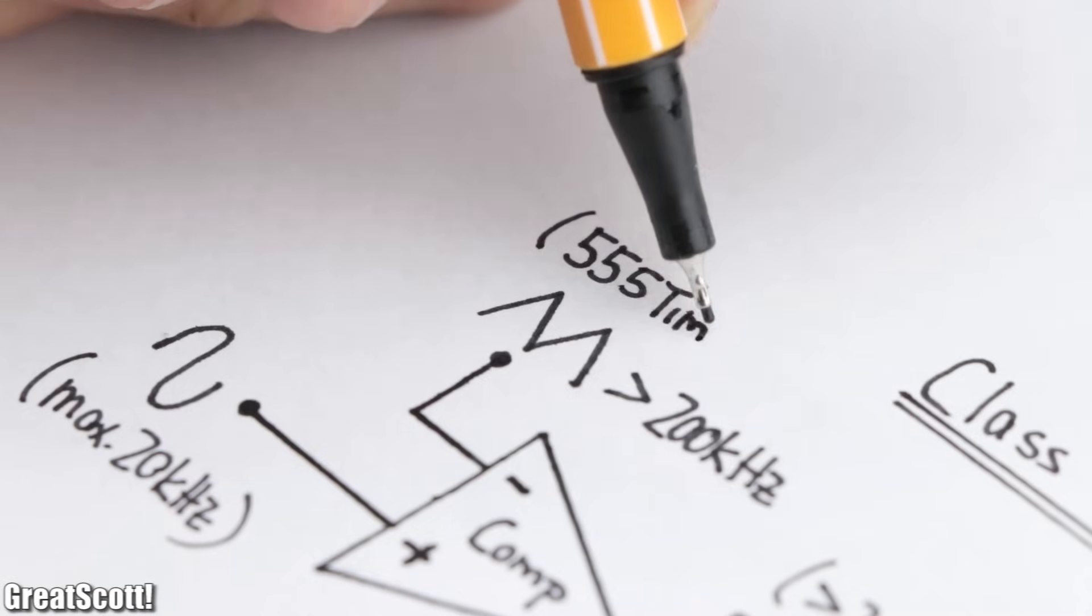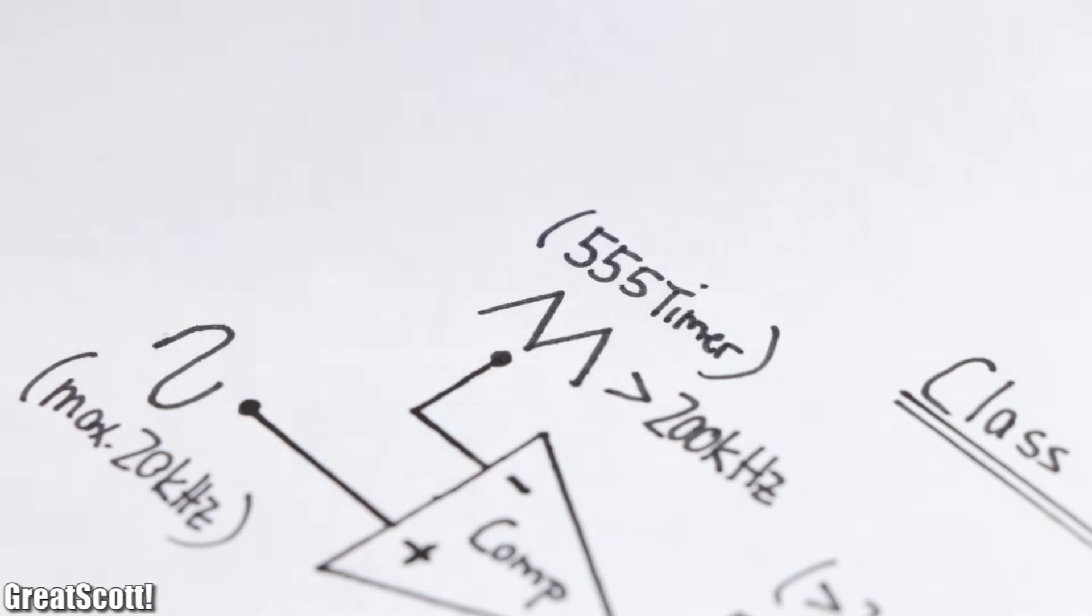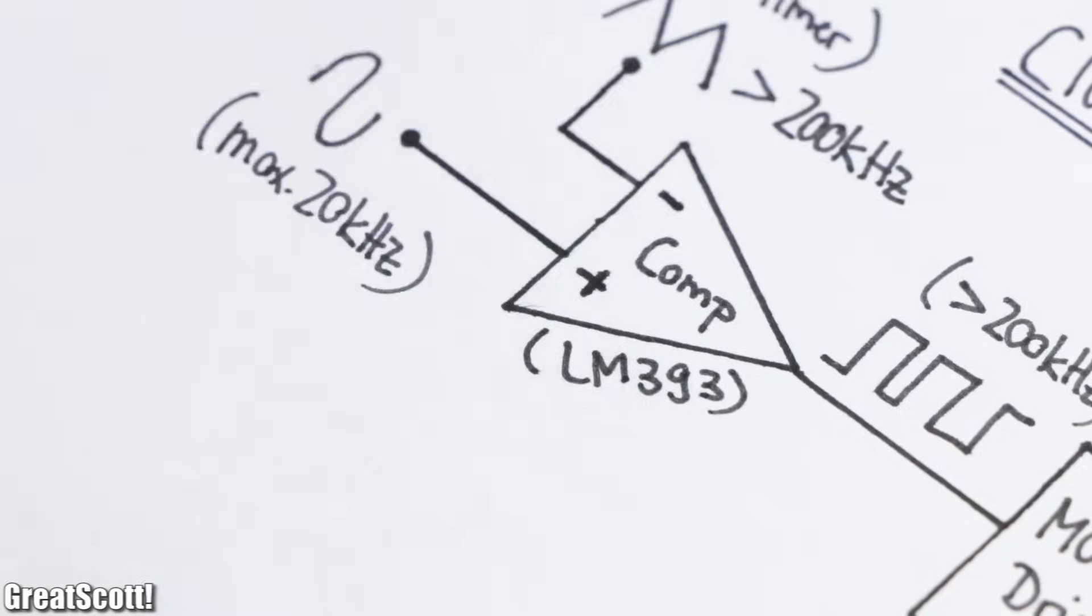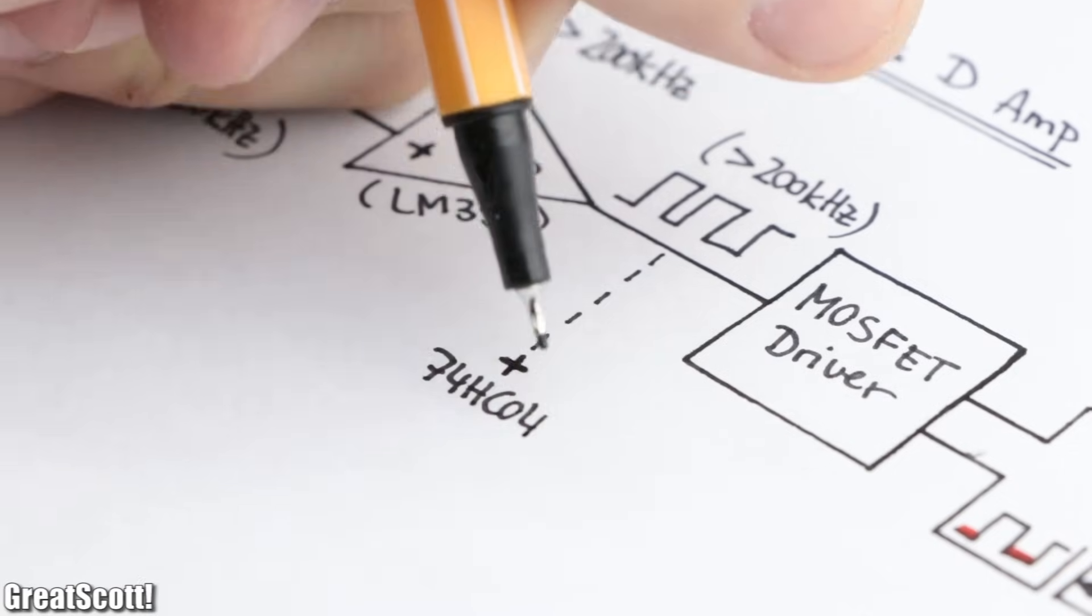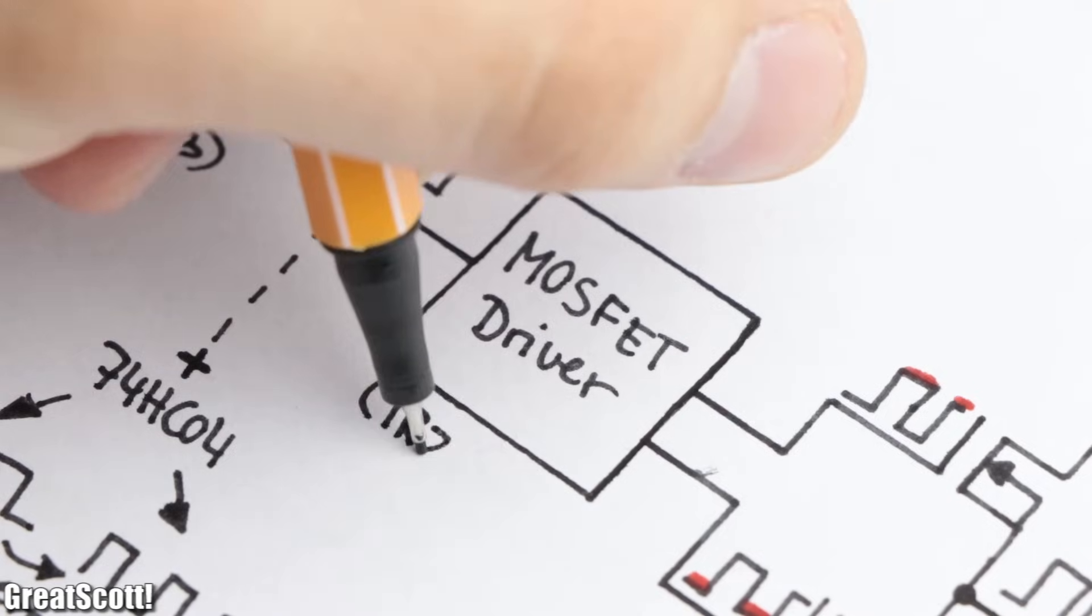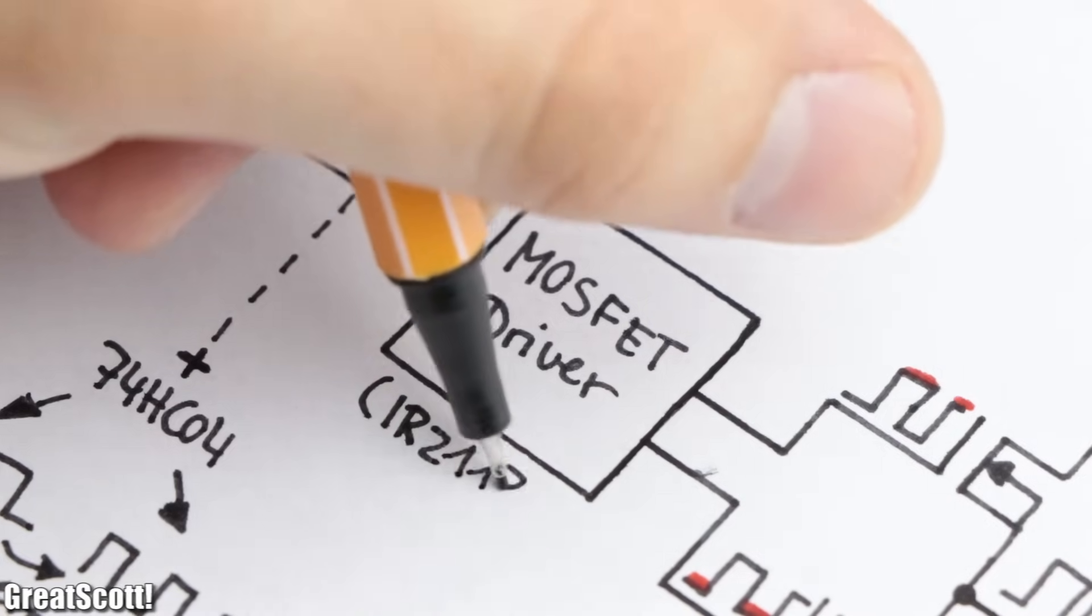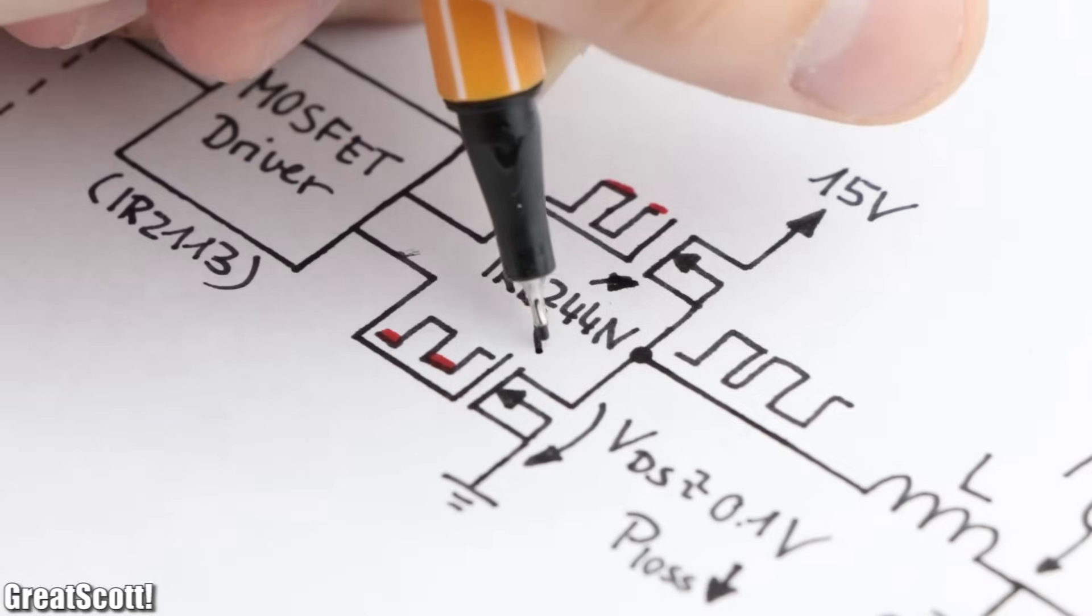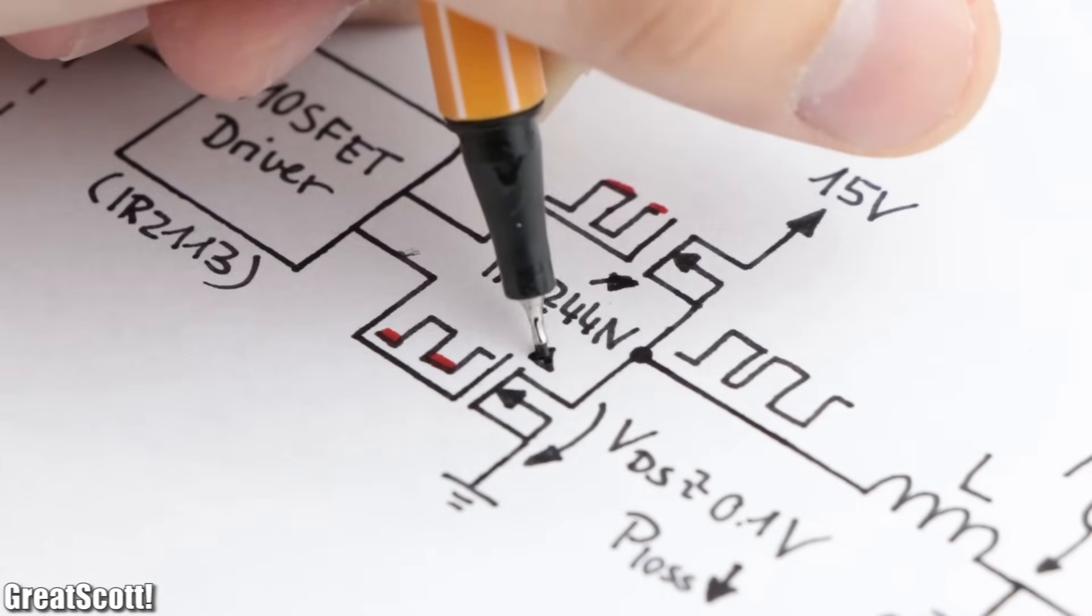As suitable components, we can use a 555 timer, a LM393, a 74HC04 to create an inverted signal of the high-frequent square wave, which is mandatory for the IR2113 MOSFET driver, and two IRLZ44N MOSFETs.